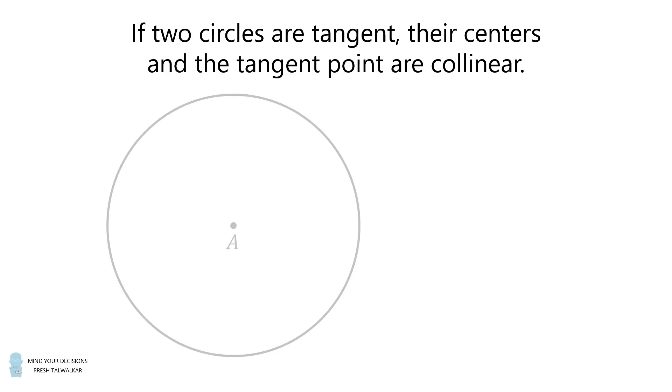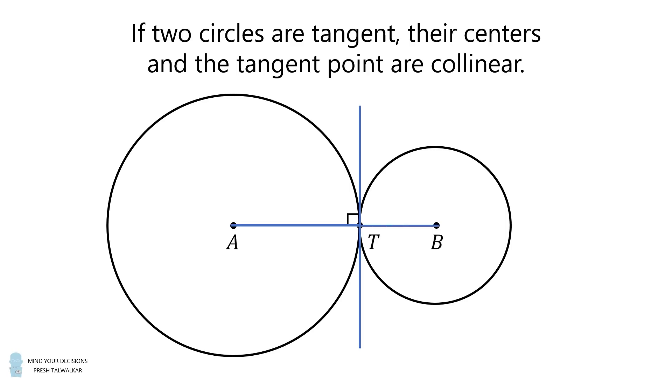Before I solve the problem, I want to review a famous principle. If two circles a and b are tangent at a tangent point t, their centers and the tangent point are collinear. The reason is that at will be perpendicular to the tangent line, and bt will also be perpendicular to the tangent line through t. Therefore, atb will be a straight line segment. This is true for both externally and internally tangent circles.